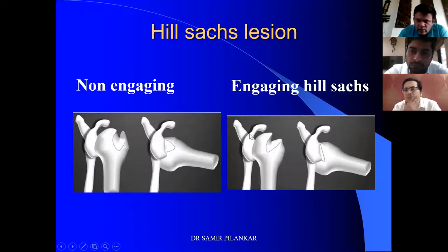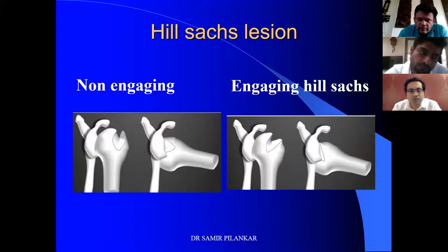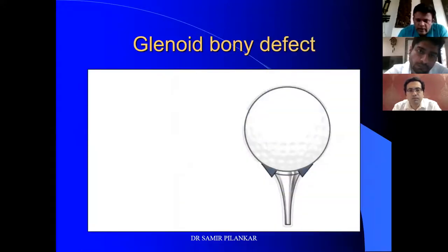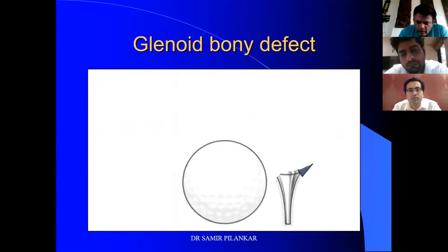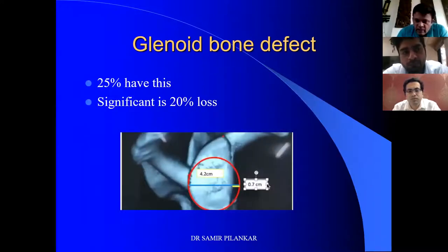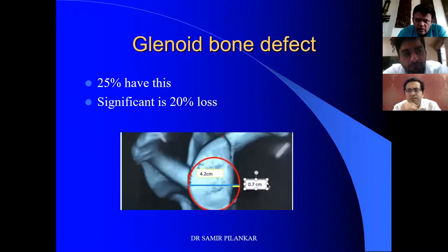The engaging Hill-Sachs needs to be addressed with additional procedures apart from Bankart repair, while a small non-engaging defect can be left alone. Glenoid bone defect is also important — if there is loss in the glenoid edge, the head topples off and you get dislocation. 25% of dislocators have this, and if there is more than 20% glenoid bone loss, it is significant. You need to address bone loss with a Latarjet procedure if more than 20% — that is the cut-off.